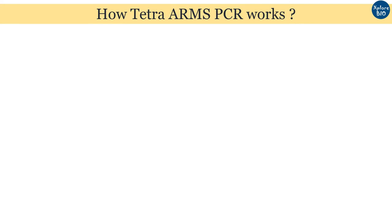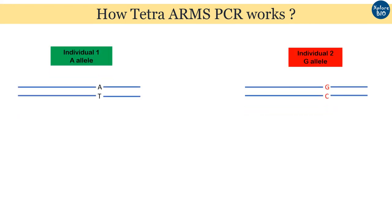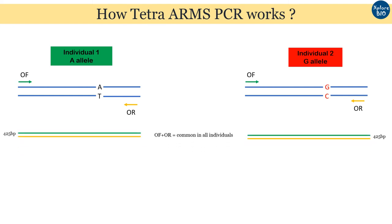Now let's understand this better. Have a look at the DNA locus of two individuals — you can see there is a variation in a single nucleotide. Looking at the first strand only: in individual 1, allele A is present, while in individual 2 it is mutated to G. The outer primer sets will bind and amplify all individuals as the sequence is the same in all of them. The inner primers are allele-specific. In individual 1, the internal forward primer will not bind as the nucleotide at the 3' end of the primer does not match the DNA sequence, but the same primer will amplify individual 2 to produce a G allele-specific band in combination with the outer reverse primer.